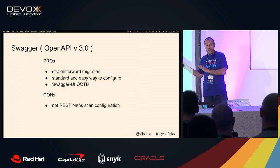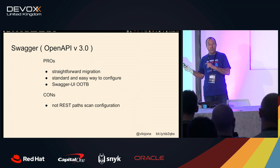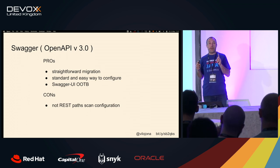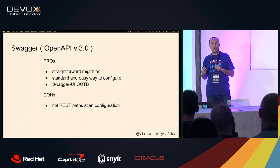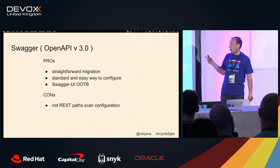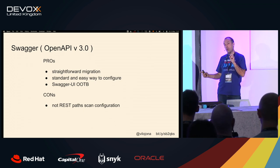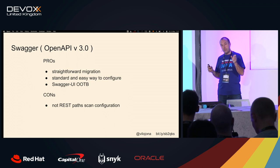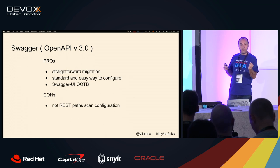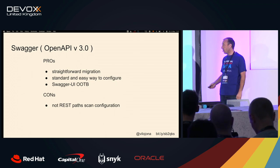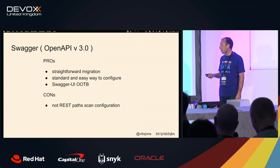At least I didn't find a way in Quarkus to specify which REST paths I want to include in the Swagger documentation. In Spring you can say 'scan this path' — so I could hide some endpoints — but I didn't find a way to do it in Quarkus.